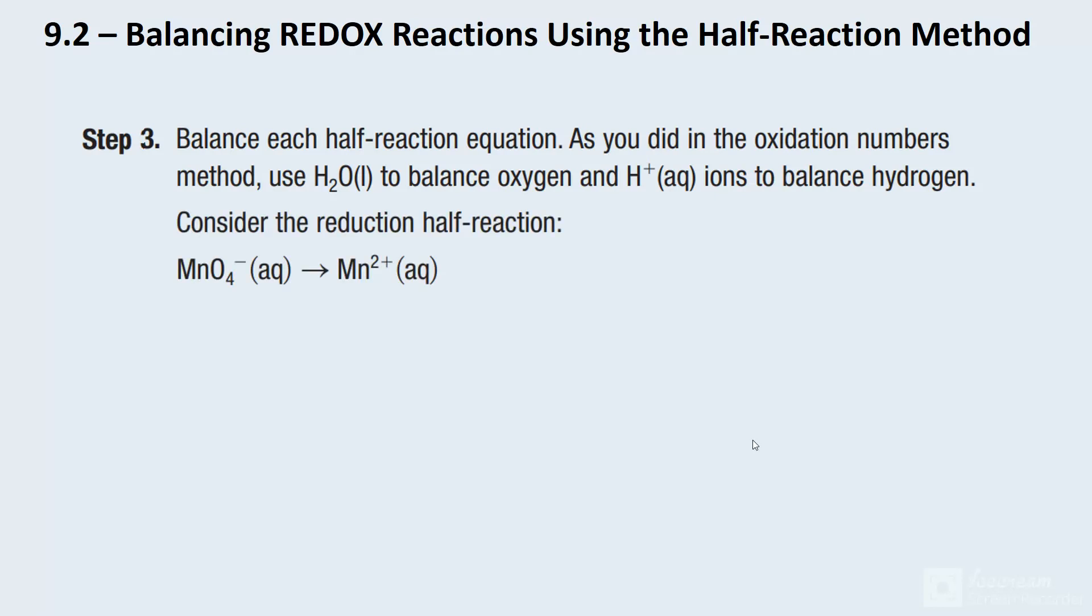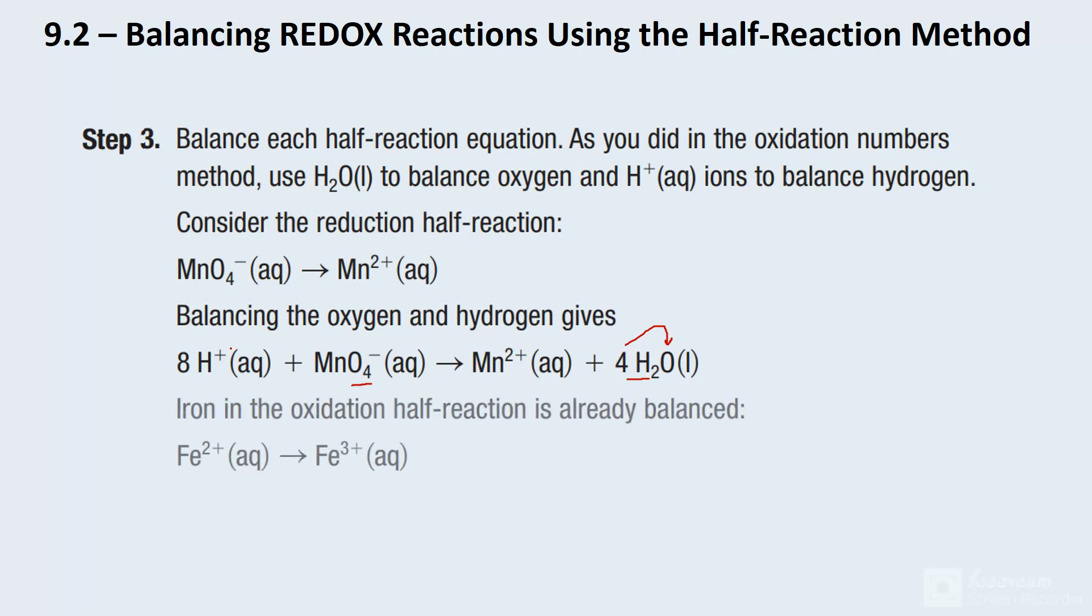So next step is we're going to have to do some balancing. So there is our manganese part. And we're going to balance the oxygen and the hydrogen. So the first trick is we want to balance—there's no hydrogen, so we're going to have to balance the oxygens. We've got four oxygens here. So we're going to have to add four waters to that side, right? So there's four oxygens. That now gives us eight hydrogens. So to the other side, we'll add our eight H pluses. The charge isn't balanced here, but the oxygen and the hydrogens have been balanced. With the other reaction, there aren't any oxygens or hydrogens. So that one's already good to go.